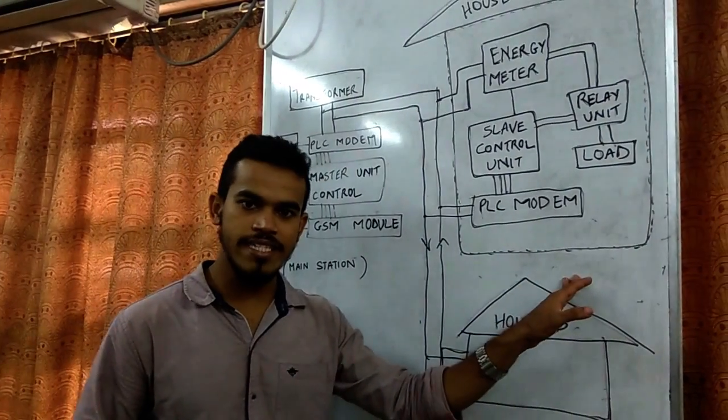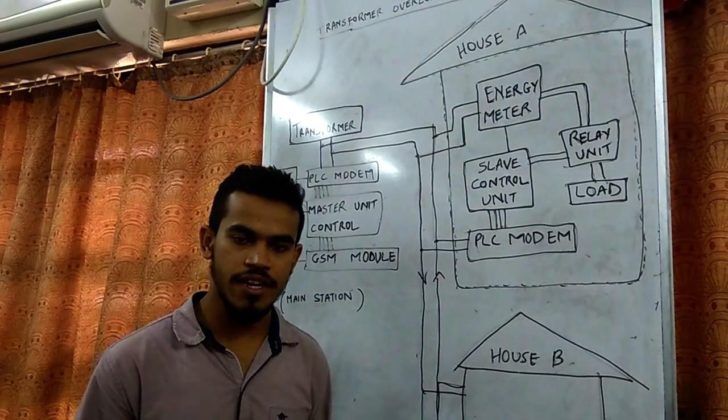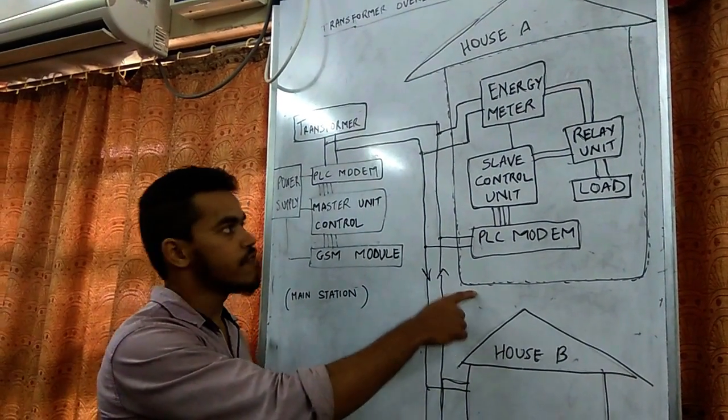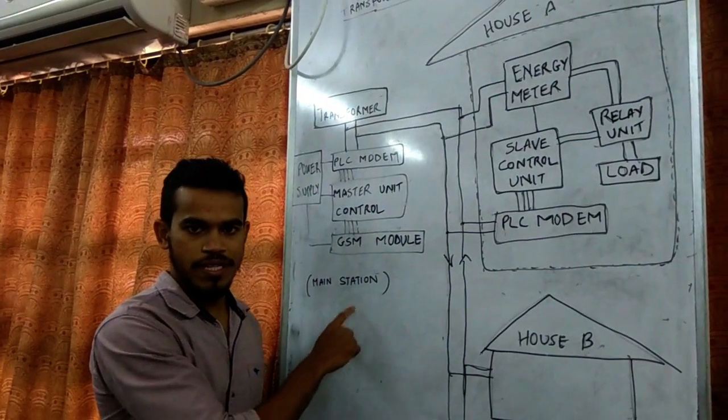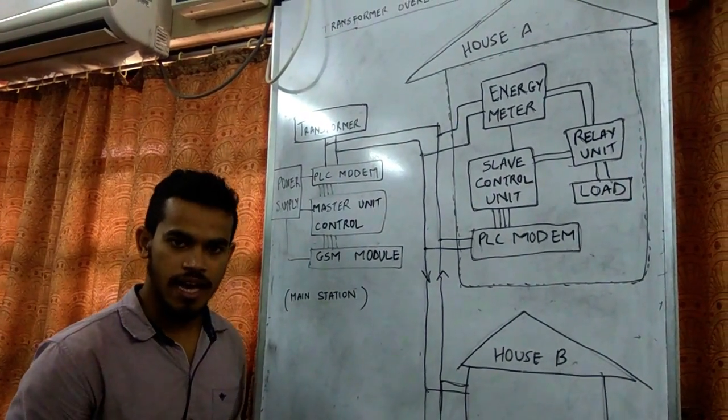There will be a certain limit given to particular houses. Suppose this house A is having a 300 watt limit, and if it is using more than 300 watts, data and ID will be sent to main station. The main station will come to know that house A is using excessive power.